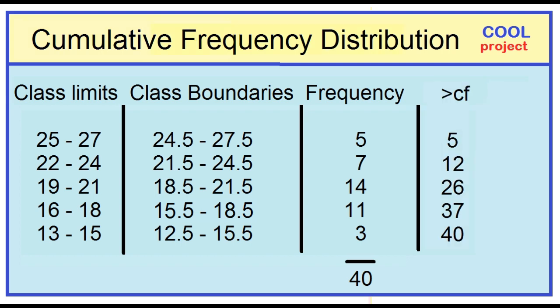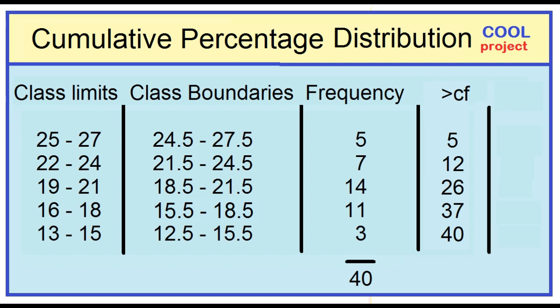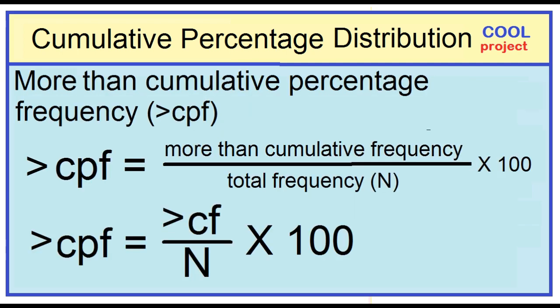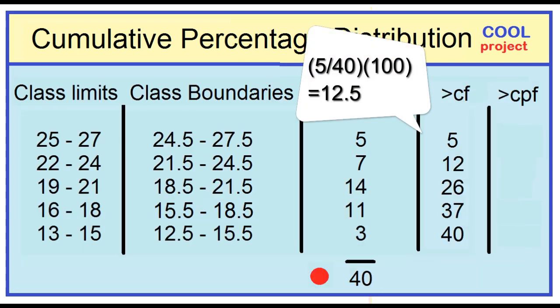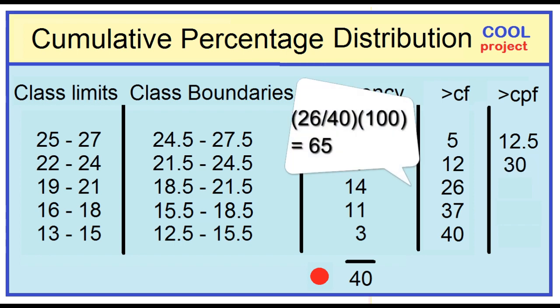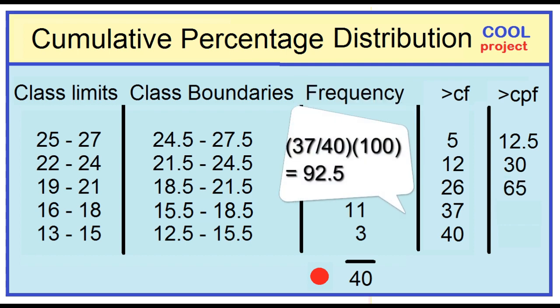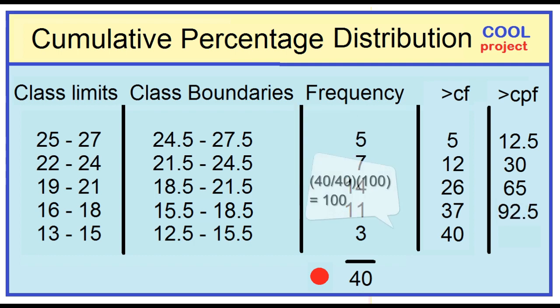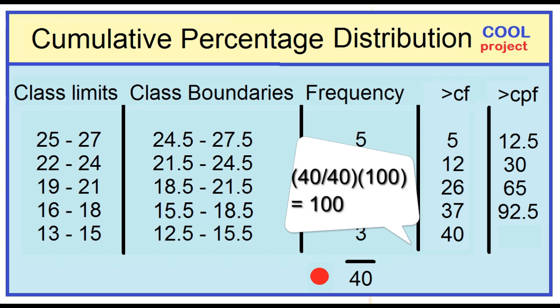Construct a cumulative percentage distribution using this more-than cumulative frequency distribution. Add a column for more-than cumulative percentage frequency. More-than cumulative percentage frequency is equal to more-than cumulative frequency divided by total frequency times 100. 5 divided by 40 times 100 is 12.5. 12 divided by 40 times 100 is 30. 26 divided by 40 times 100 is 65. 37 divided by 40 times 100 is 92.5. 40 divided by 40 times 100 is 100.